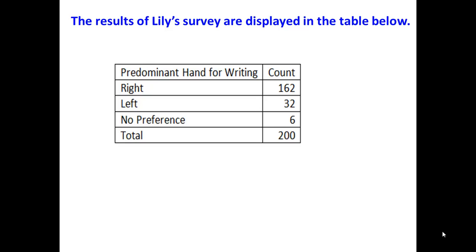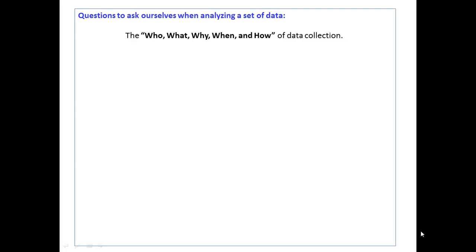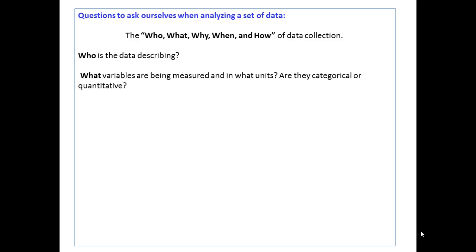The results of Lily's survey are displayed in the table below. Now we come to analyzing the data. Does the data from Lily's survey provide evidence that the proportion of students who write predominantly with their left hand has changed since 1980? The goal of data collection is to get to the story behind the data. Some questions to ask when analyzing data: the who, what, why, when, and how of data collection. Who is the data describing? What variables are being measured and in what units? Are they categorical or quantitative? Knowing this will guide which graphical displays and analyses we use.